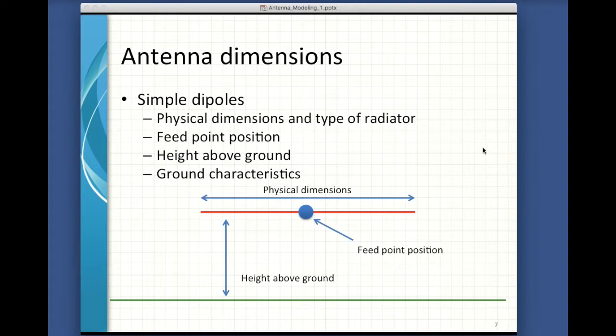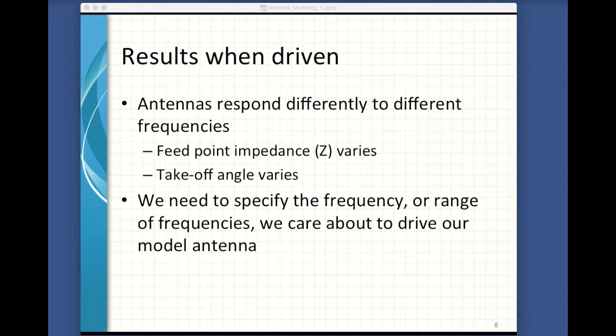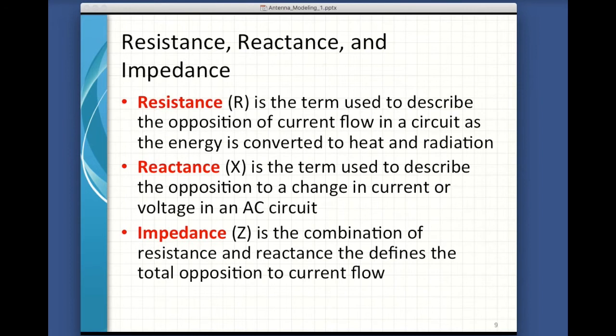Thankfully, the modeling software provides some easy ways to specify what the ground looks like. Antennas are usually constructed for a particular frequency, band, or set of bands. Any given antenna will change its behavior as the frequency varies. Two of the biggest changes appear in the feed point impedance — usually called Z or Z0 — which is the total number of ohms presented to the signal generator, like your transceiver. The takeoff angle is the angle above the horizon where most of the radiation is released. We also need to specify the frequencies that we're interested in to produce meaningful results in our model.